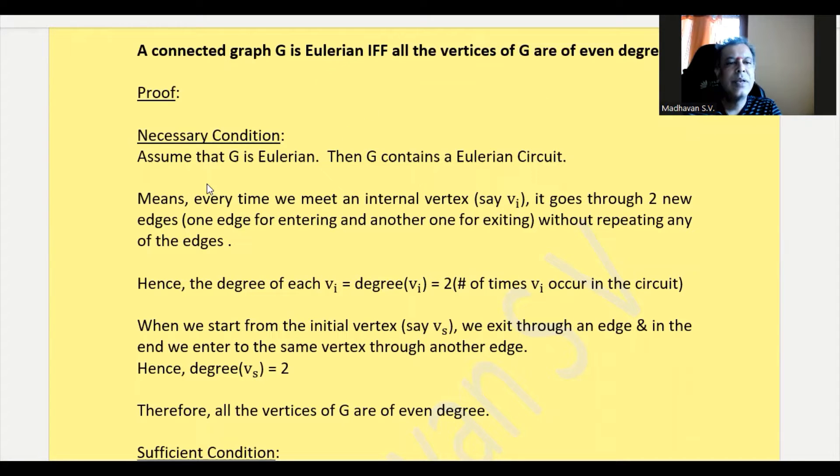First, the necessary condition: assume that G is Eulerian, meaning G contains an Eulerian circuit. Every time we meet an internal vertex, say vi, it goes through two new edges - one edge for entering and another for exiting without repeating any edges, because it must conform to an Eulerian circuit where edges cannot be repeated.